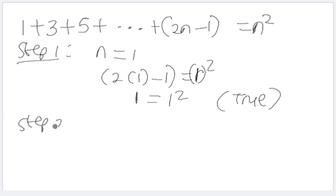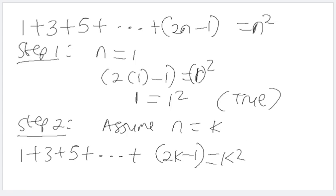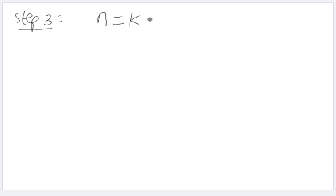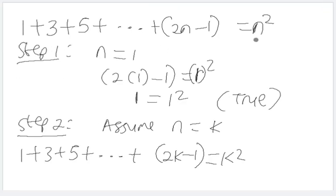Having satisfied the first condition, we move to step two: assume that n equals k. The statement becomes one plus three plus five plus ... plus (2k minus one) equals k squared. Then step three: we must show the condition holds for n equals k plus one, so we have one plus three plus five plus ... plus two times (k plus one) minus one equals (k plus one) squared.